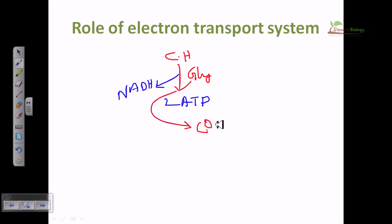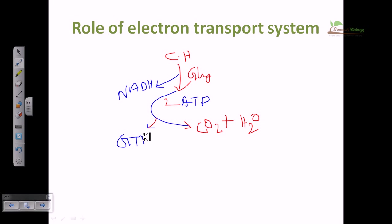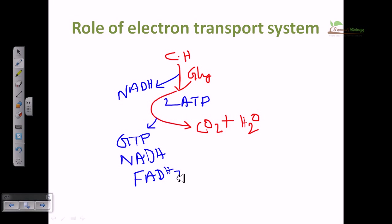Pyruvate is converted via another cycle called the TCA cycle, or tricarboxylic acid cycle, or citric acid cycle. Right after the citric acid cycle we have also produced GTP, which is energetically equivalent to ATP but has some different features. It also produces NADH — another electron-carrying molecule — and FADH2, another type of electron-carrying molecule. So right after glycolysis and the Krebs cycle, we have produced 10 NADH molecules, 2 GTP molecules, 2 ATP molecules, and 2 FADH2 molecules.